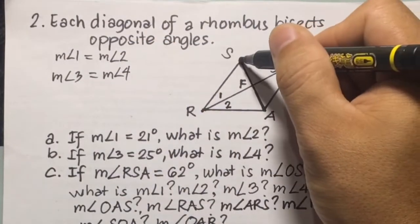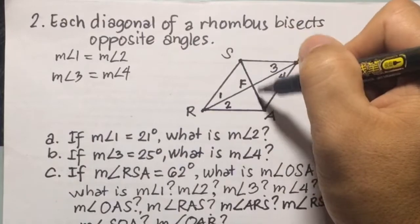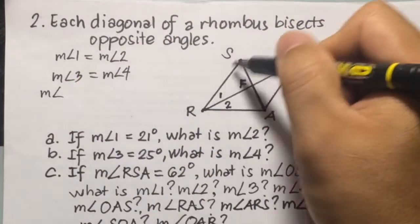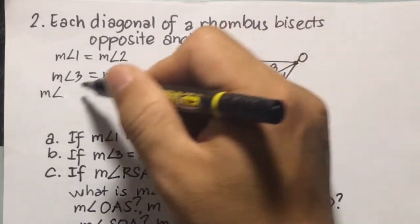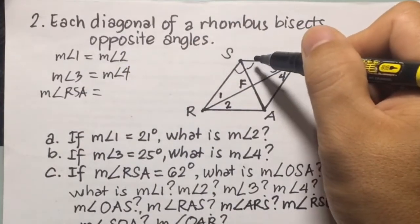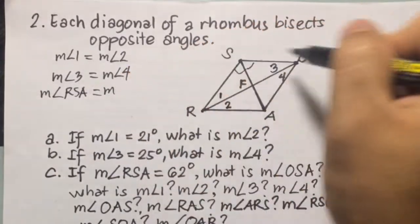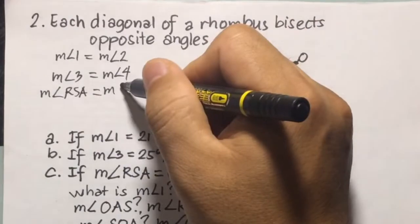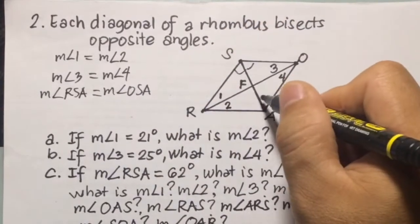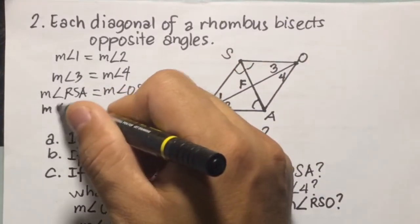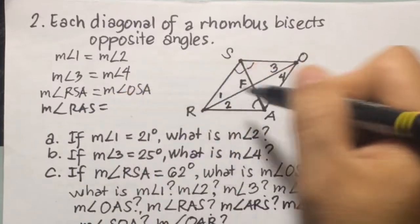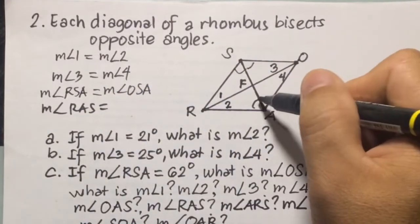If we have diagonal SA, we can say that the measure of angle RSA is equal to the measure of angle OSA. And below, we have the measure of angle RAS equal to the measure of angle OAS.